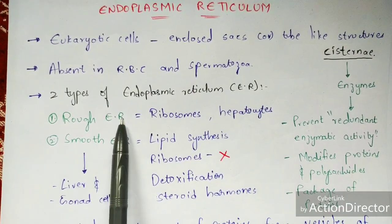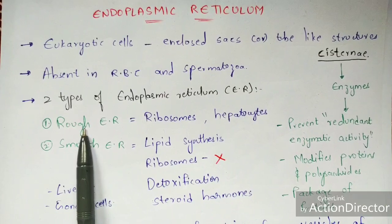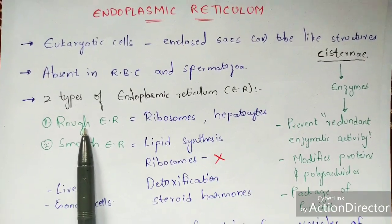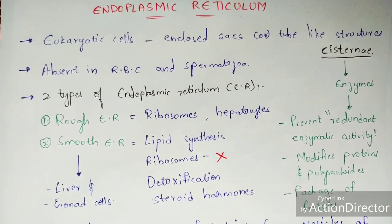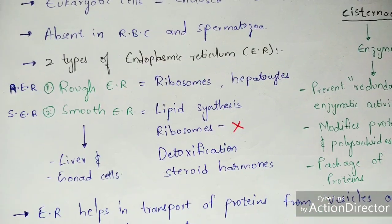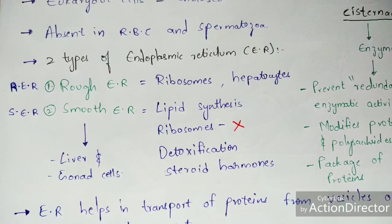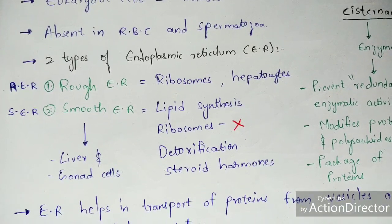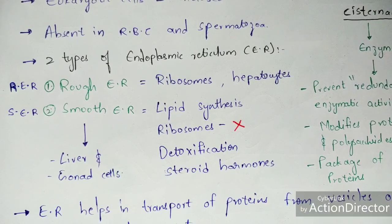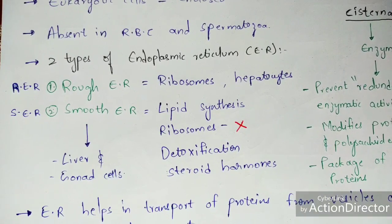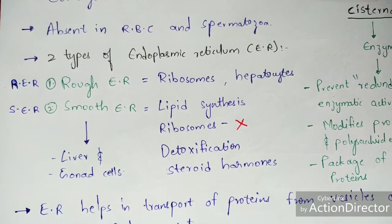Based upon the presence and absence of ribosomes, the endoplasmic reticulum is classified into two types: rough endoplasmic reticulum (RER) and smooth endoplasmic reticulum (SER). The major difference is that in RER the ribosomes are present, whereas in SER the ribosomes are absent.